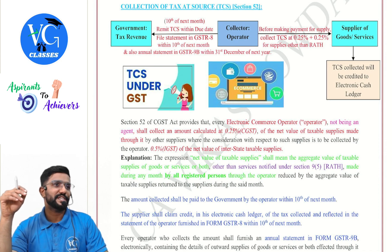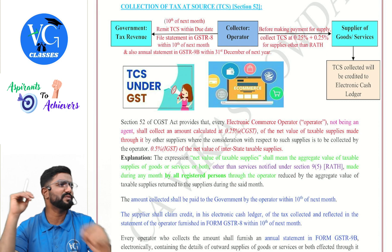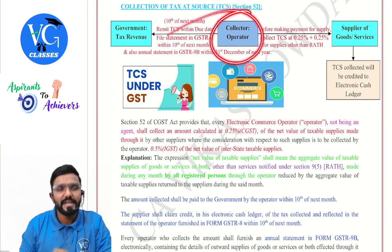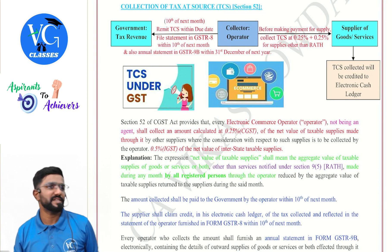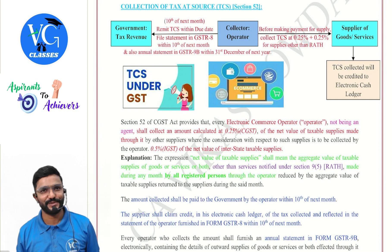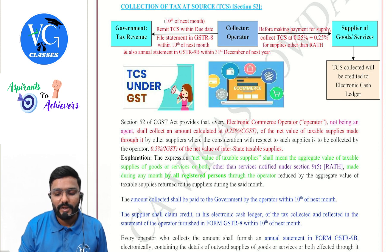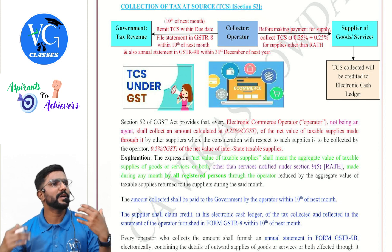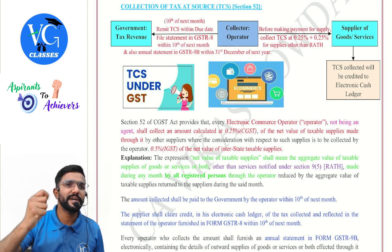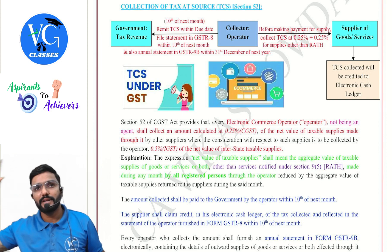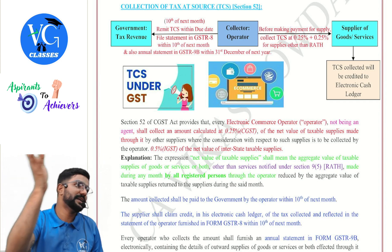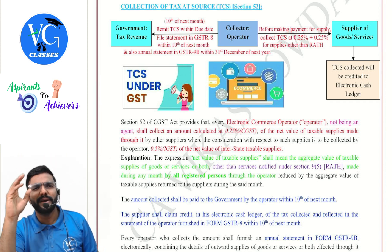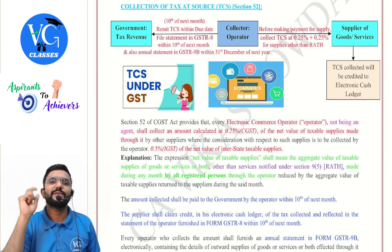Now coming to TCS — Tax Collection at Source, section 52. This is also covered in only one section. Who should collect TCS? The e-commerce operator. When? For supplies other than RCM notified services — if it is an RCM service, the e-commerce operator straight away pays tax under section 9(5). In any other case, he should collect TCS. Normally, the e-commerce operator is a platform where goods or services are listed, the customer orders, the actual supplier delivers, and the customer pays to the platform, which then passes on the payment to the supplier after deducting commission.